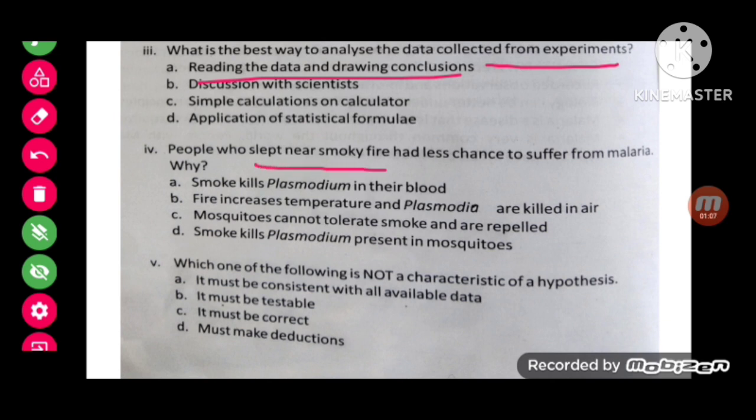MCQ number 4: people who slept near smoke fires have less chance to suffer from malaria. Why? Mosquitoes cannot tolerate smoke and are repelled.